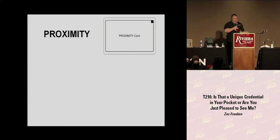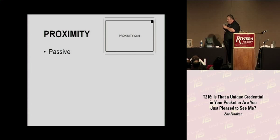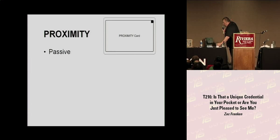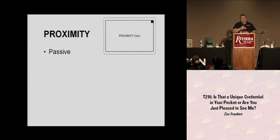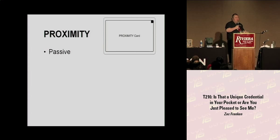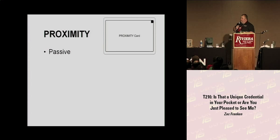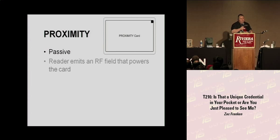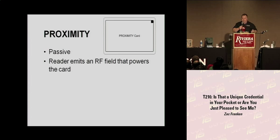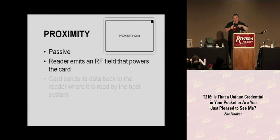Now we're going to talk about proximity cards. Standard proximity cards tend to be 125 kilohertz. Contactless smart cards operate in the 13.56 megahertz range. The reader emits an RF field that powers up the card, and then the card sends its data back and the reader sends it back to the host system.